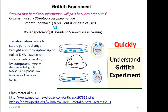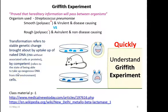The rough strain is avirulent and non-disease-causing. The finding of this experiment is that transformation refers to a stable genetic change brought about by uptake of naked DNA — that is DNA without associated cells or proteins — taken up by certain groups of organisms. The type of organism taking up the DNA is referred to as a competent cell. Competency refers to the state of being able to take up exogenous DNA from the environment, causing a stable genetic change in the organism.